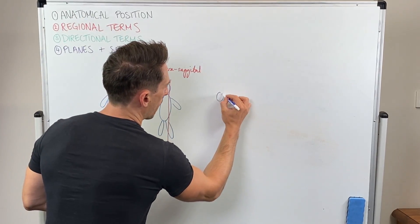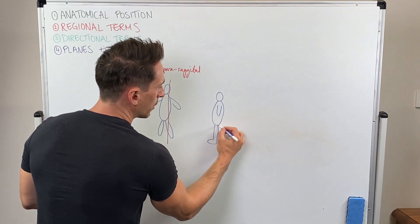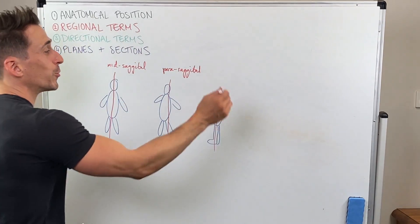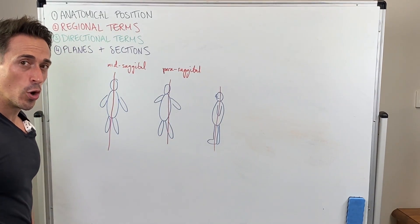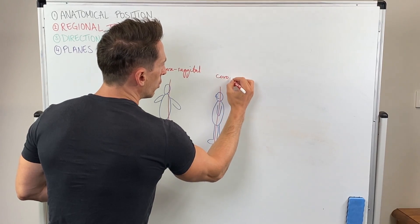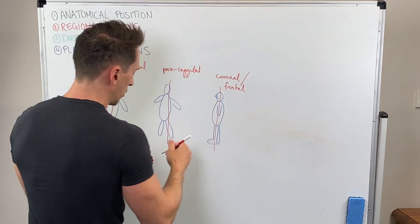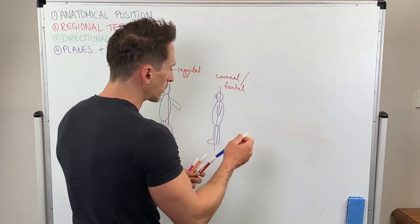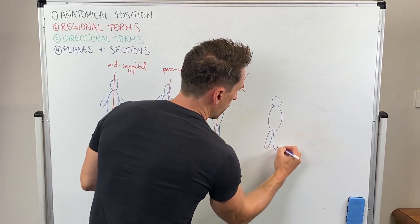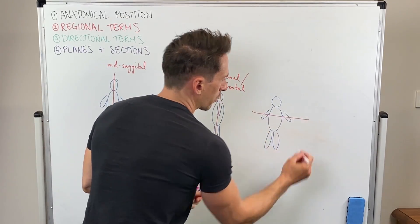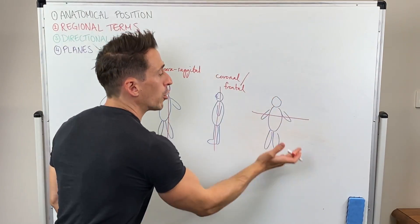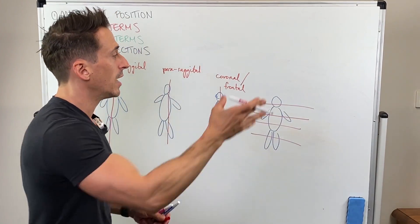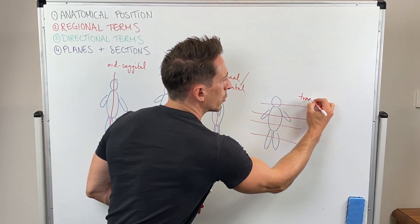If we draw a body facing laterally and do an imaginary plane separating into anterior front and posterior back sections, we call this a coronal section, also known as a frontal plane. It separates the body into anterior and posterior sections. And if we do an imaginary plane separating into superior above and inferior below sections — this plane can be at any height — this type of plane is called a transverse plane.